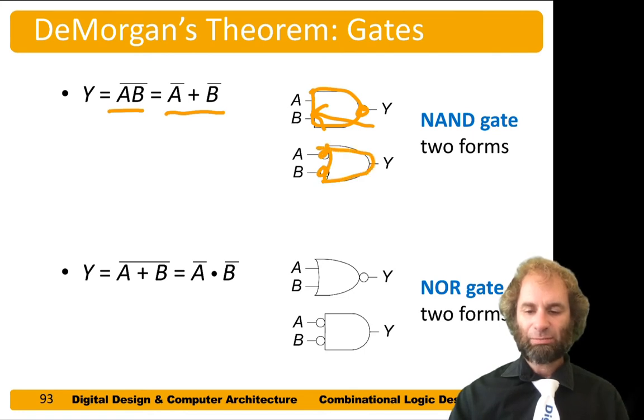So A NAND B is equivalent to NOT A or NOT B. You notice I'm just going to draw my bubbles on the gates. I got fancy enough at this point we don't need to draw inverters everywhere.